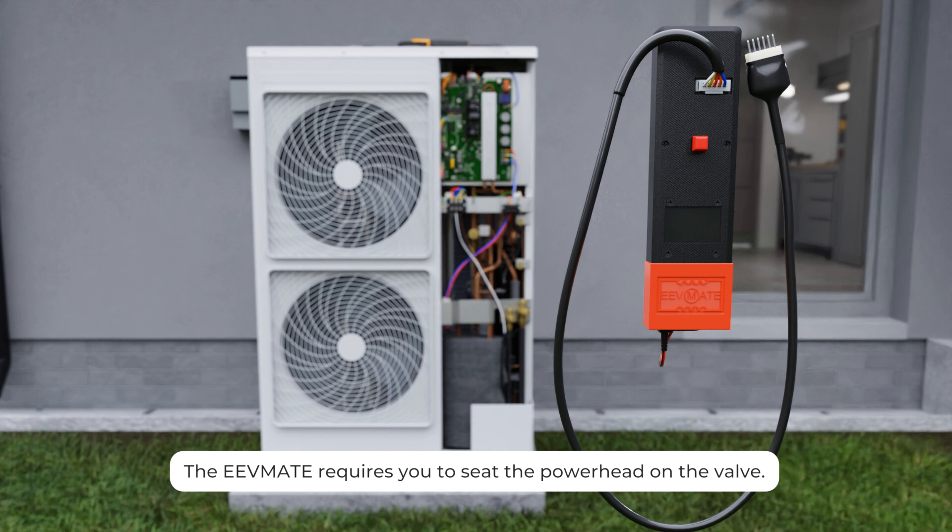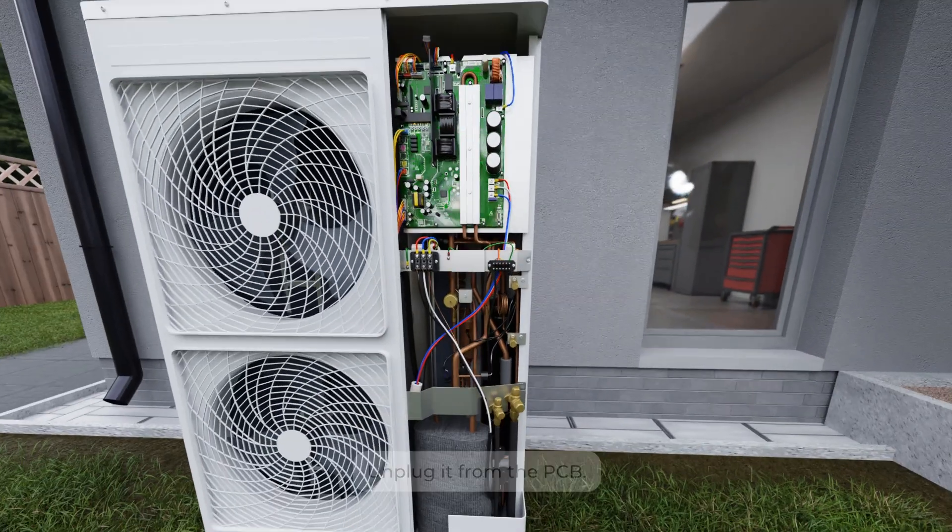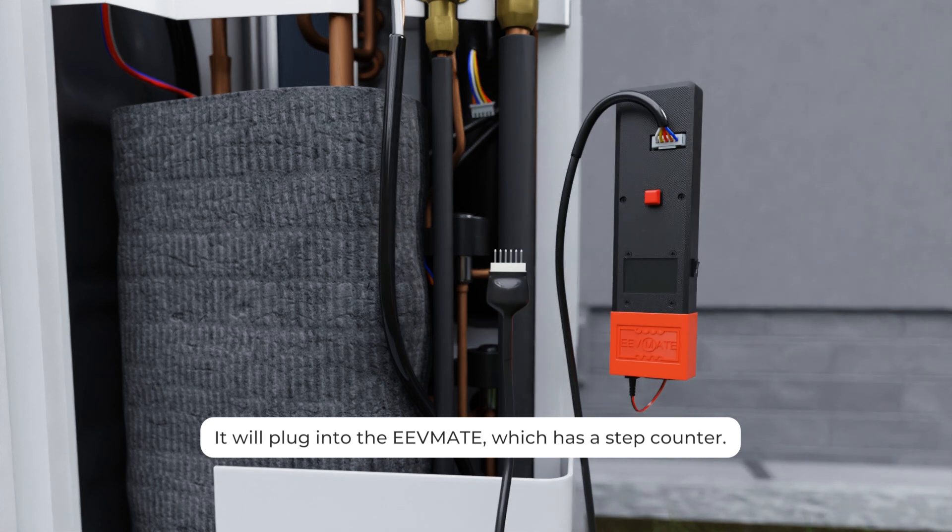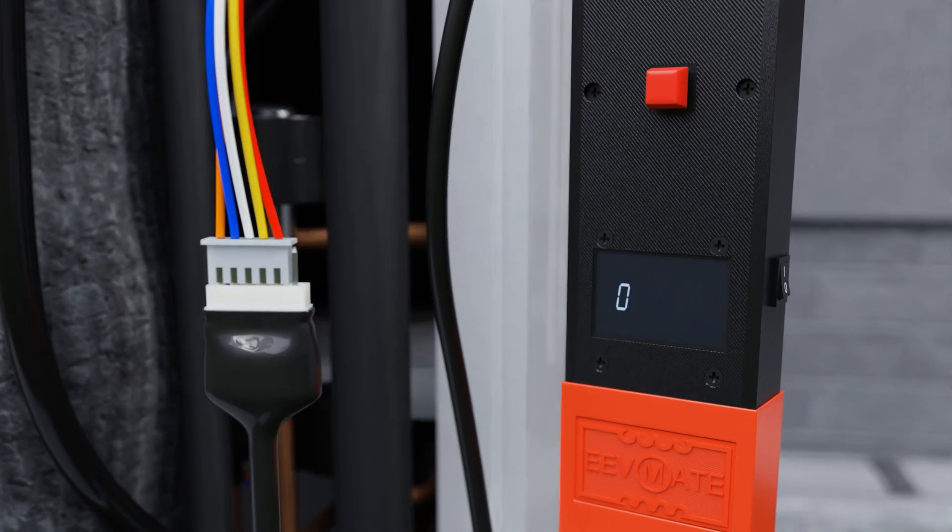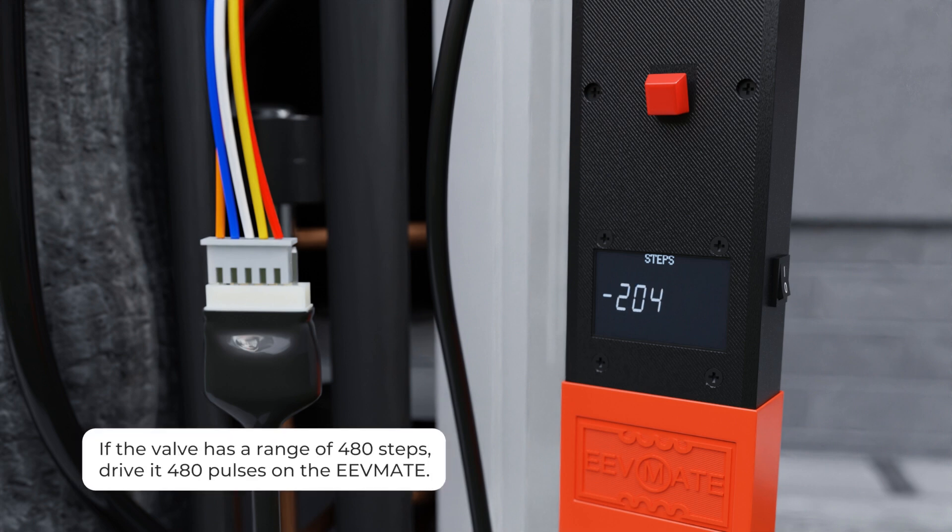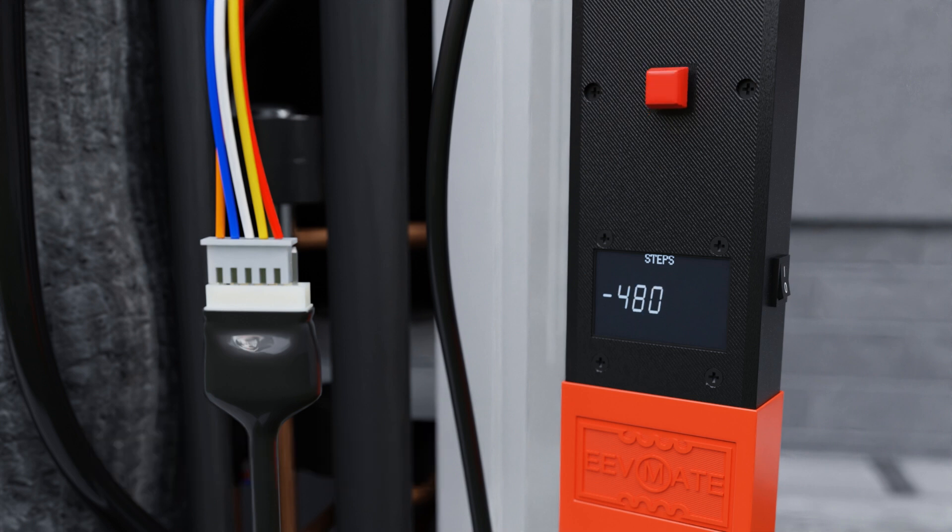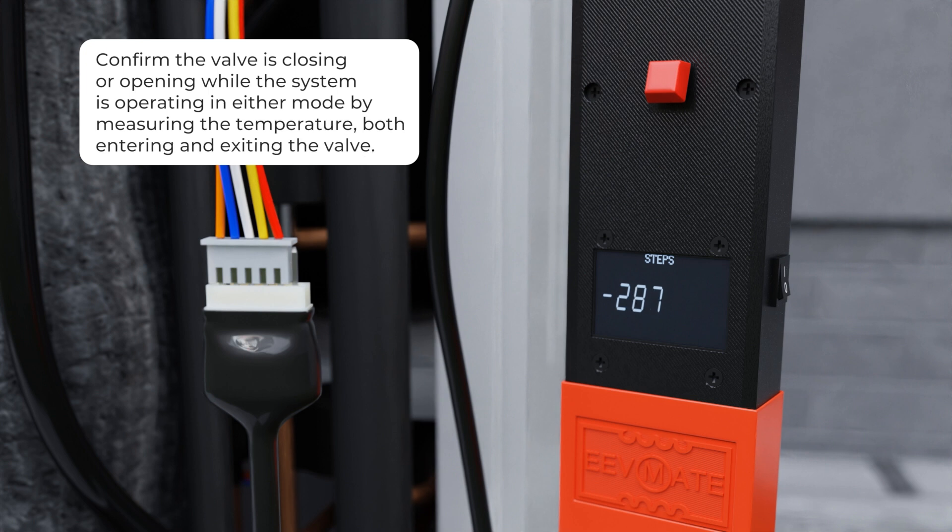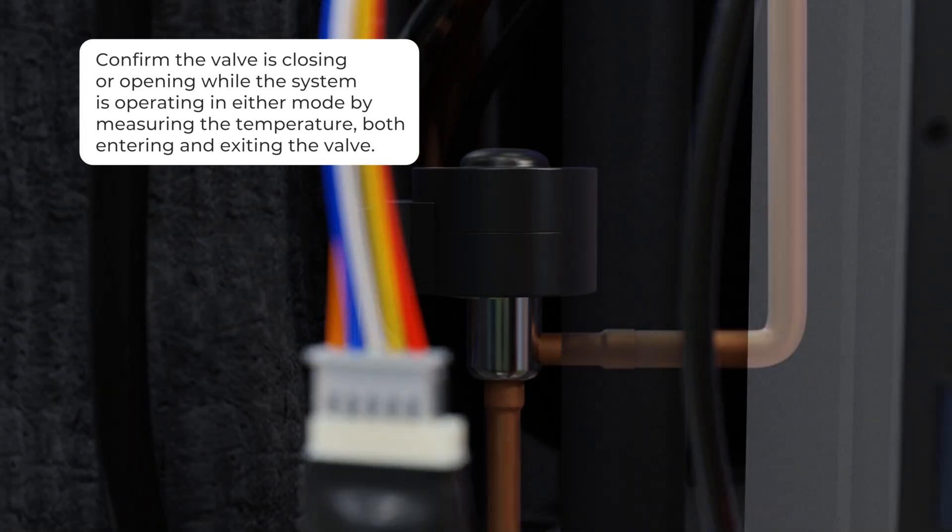The EEV Mate requires you to seat the power head on the valve but unplug it from the PCB. It will plug into the EEV Mate which has a step counter. You will then drive the valve manually using the EEV Mate tool. If your valve has a maximum range of 480 steps, we want to drive the valve 480 pulses on the EEV Mate. Confirmation of the valve closing or opening can be confirmed while the system is operating in either mode by measuring the temperature, both entering and exiting the valve.